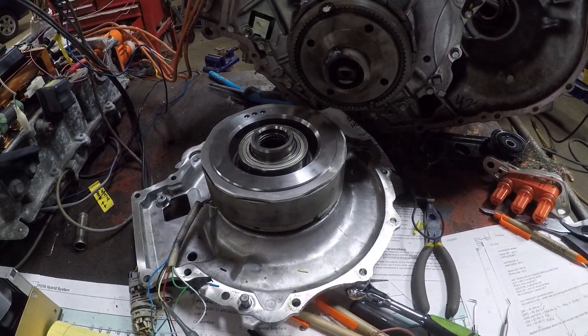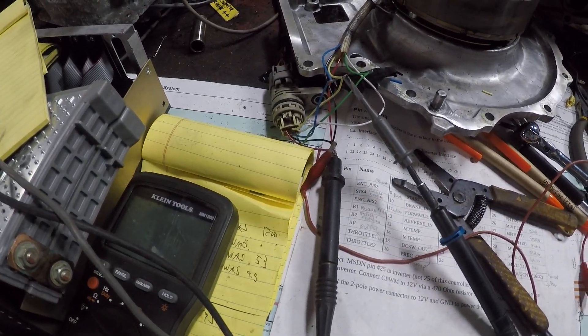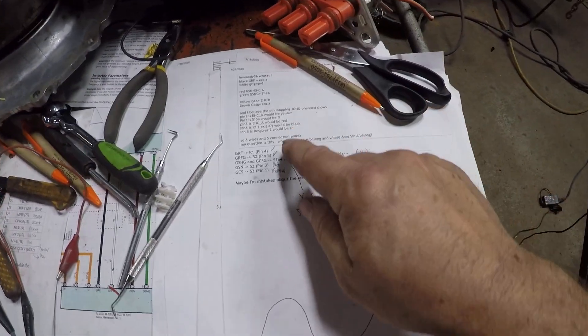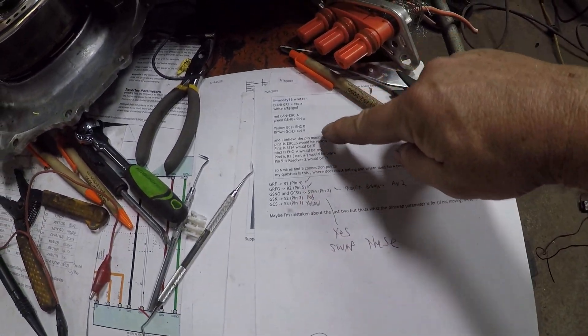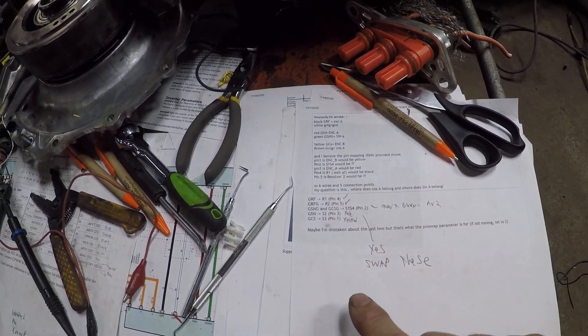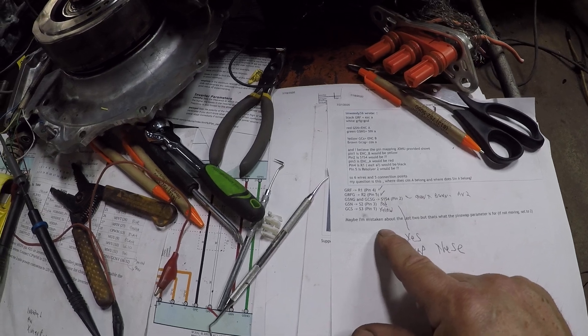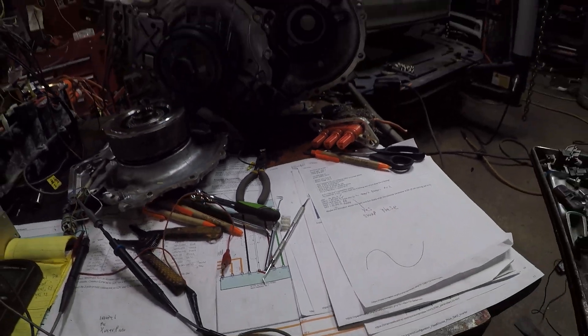All right, so I don't understand - we got a couple of common wires, pin 2, and I'm looking at sine and cosine on the other two pins.